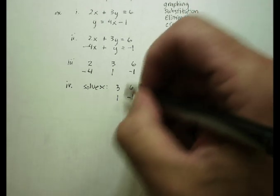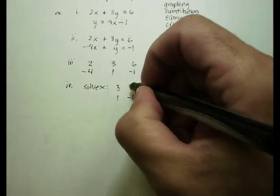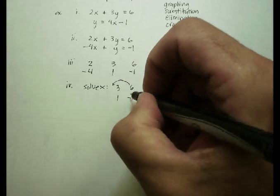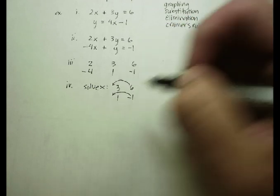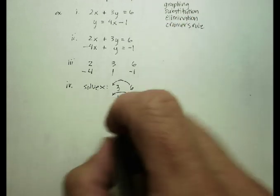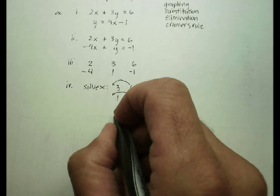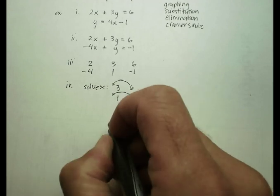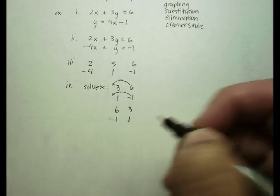And then I'm going to rearrange these numbers just a little bit. I'm going to move that 6 into the front, and that negative 1 into the front. So my new matrix looks like this: 6, 3, negative 1, 1.